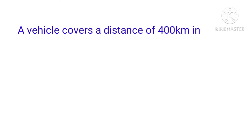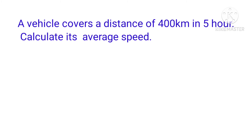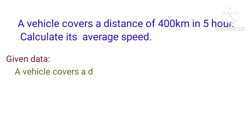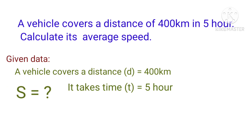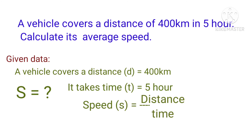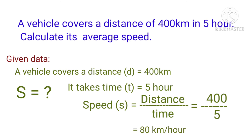Problems: a vehicle covers a distance of 400 kilometers in 5 hours, calculate its speed. Given data: distance d = 400 km, time t = 5 hours. To find: speed. Formula: speed = distance divided by time. Therefore speed = 400 divided by 5 = 80. The speed is 80 kilometers per hour.